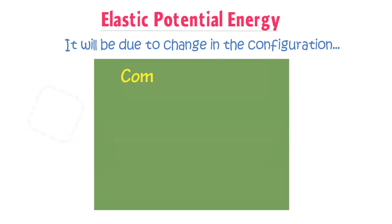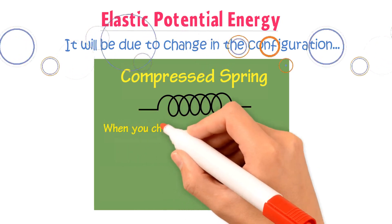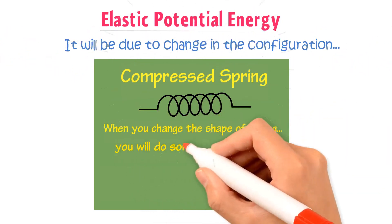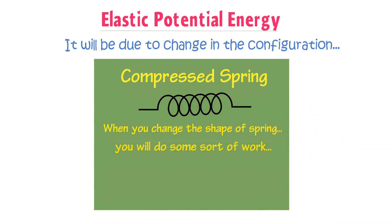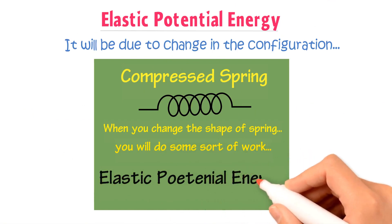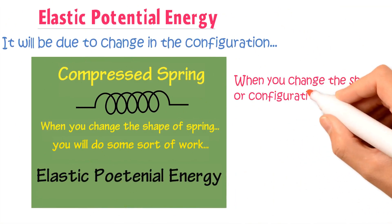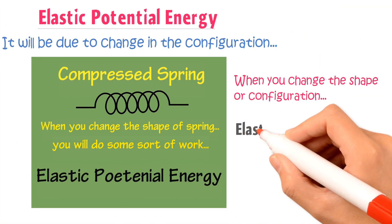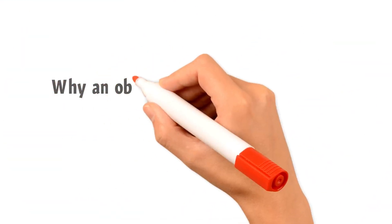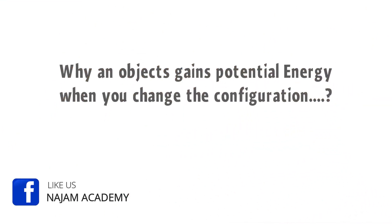The best example of Elastic Potential Energy is a Compressed Spring. When you change the shape of a spring, you will need to do some sort of work. This work will be stored as Elastic Potential Energy in the spring. Remember that when you change the shape or configuration of a body, the body will gain Elastic Potential Energy.